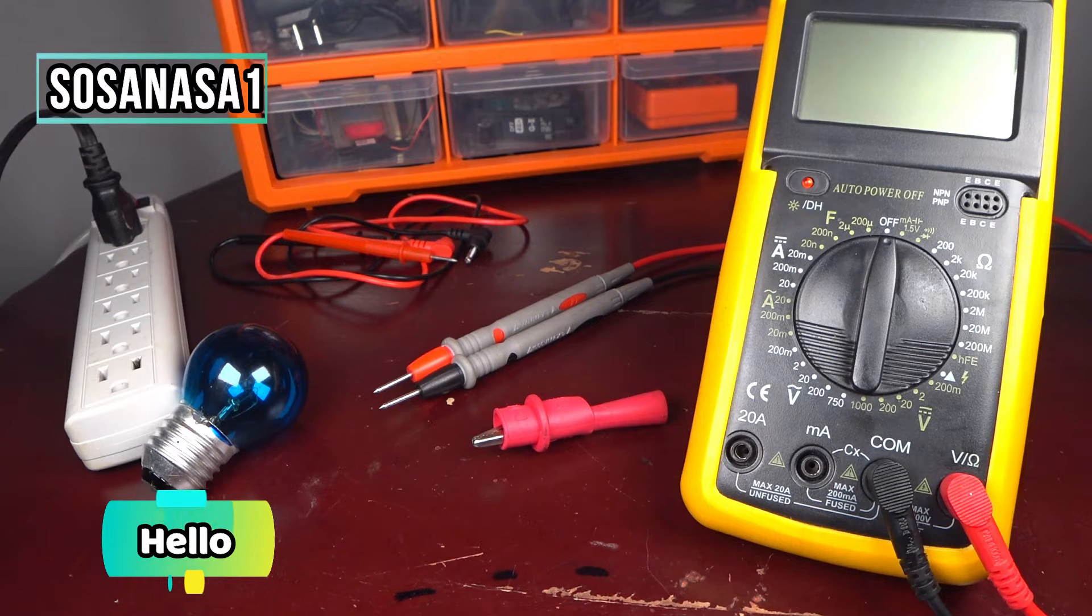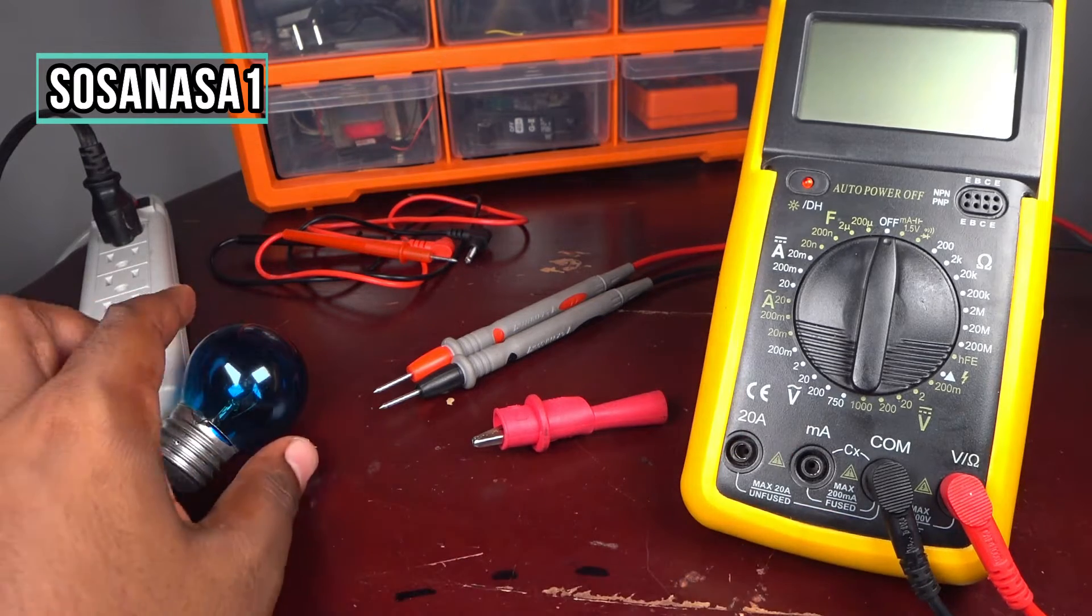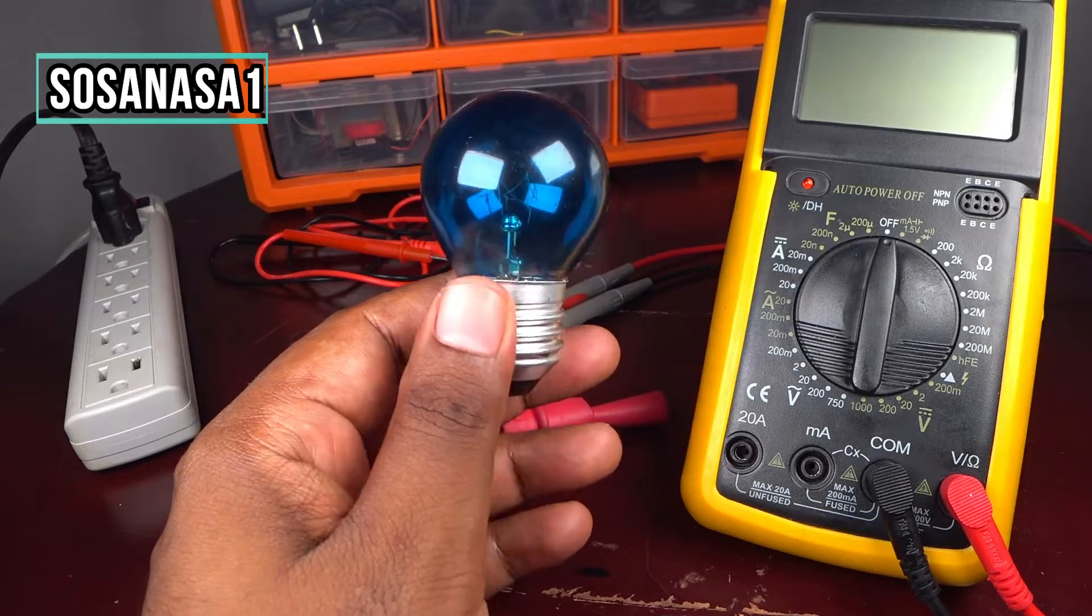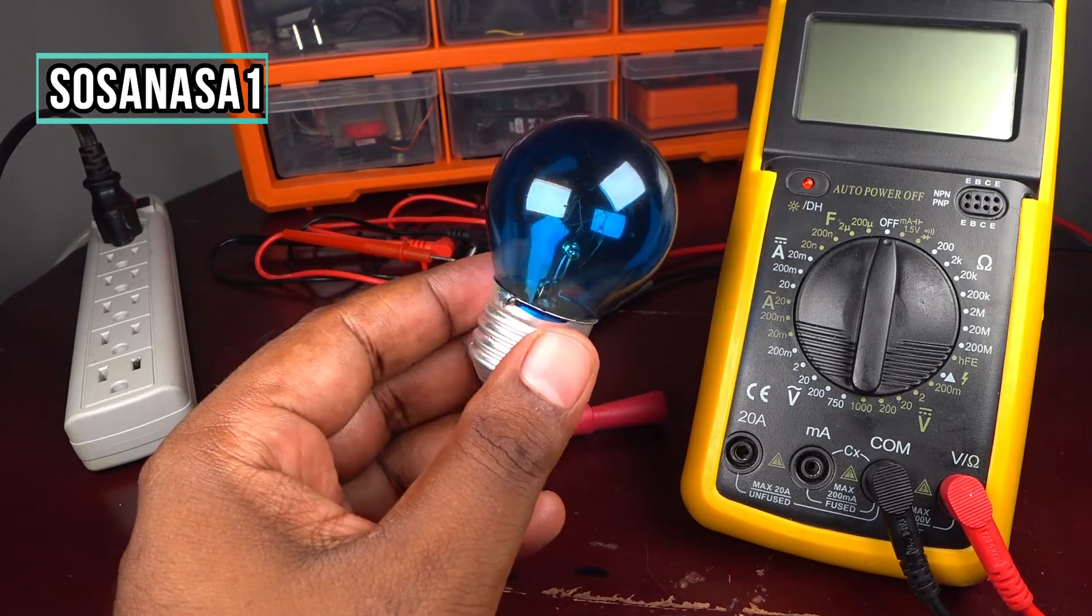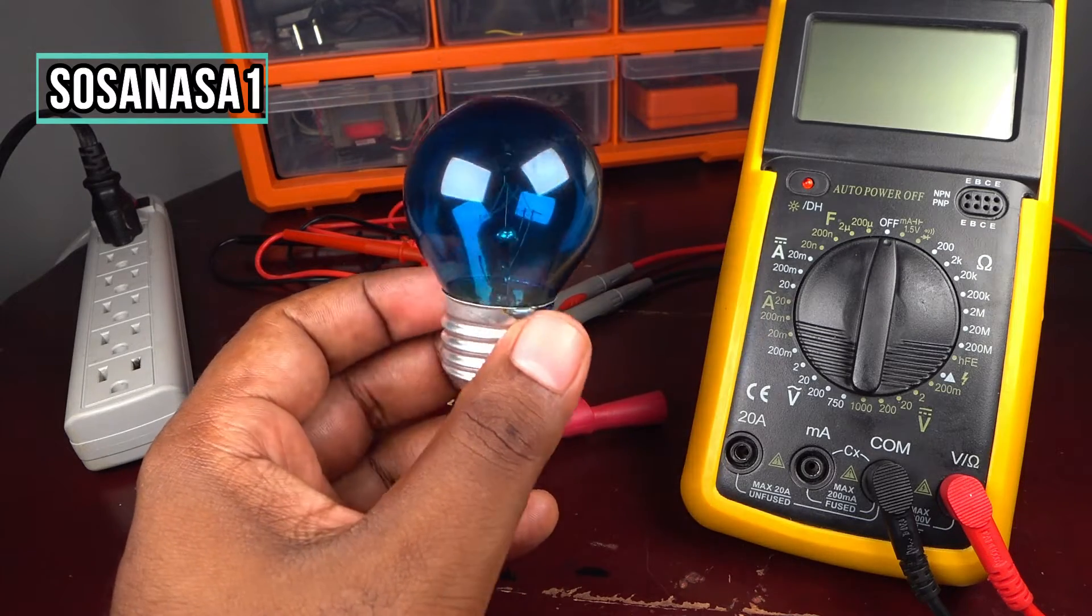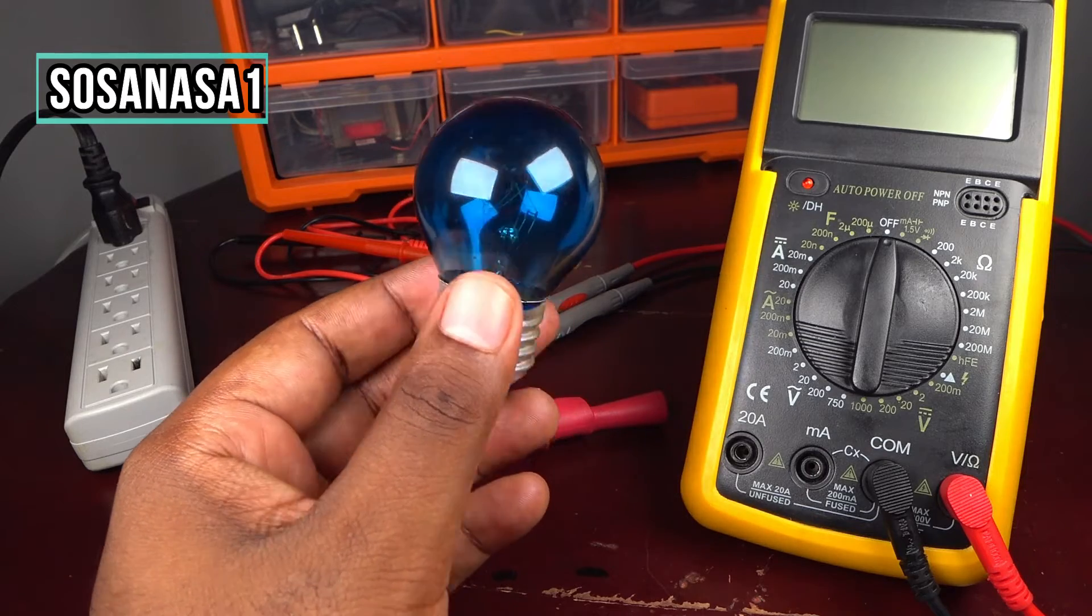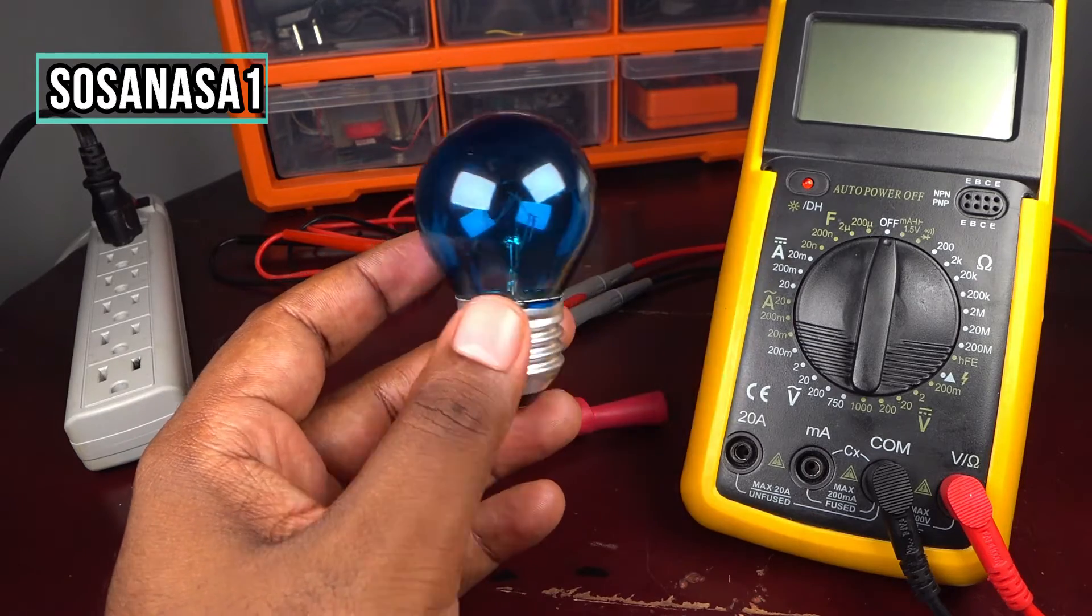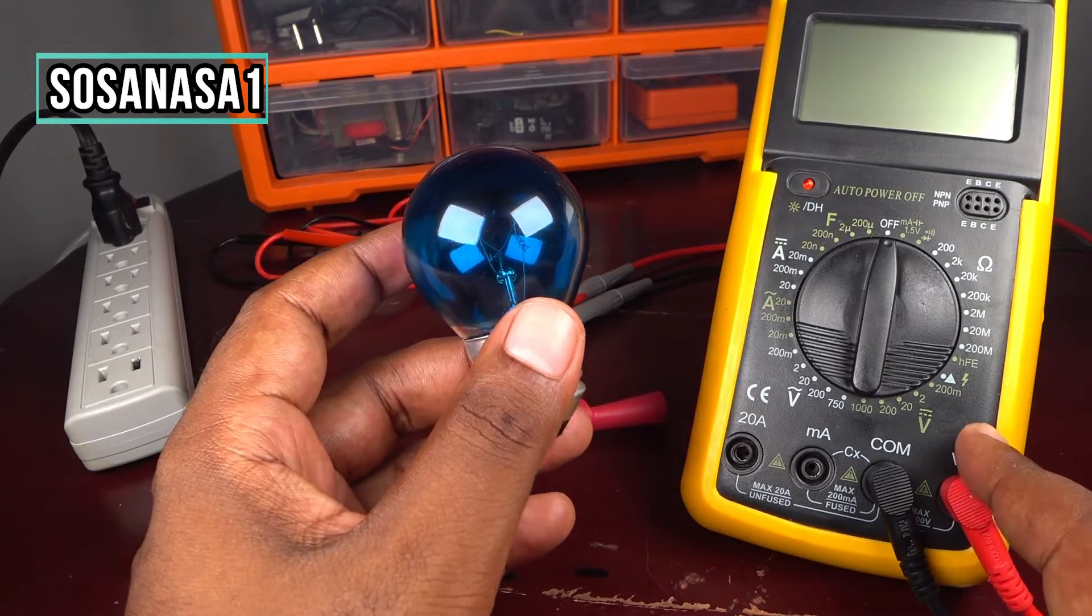Hello, this is your channel SosaNasa1. My name is Emmanuel and now I'm going to show you how to use this digital multimeter to measure how many amperes this light bulb uses. In this case, this is an old light bulb which I'm holding in my hand now. We are going to use this digital multimeter to measure how many amps this light uses while it is on.